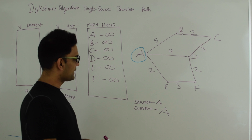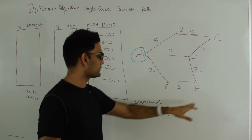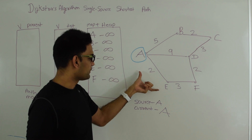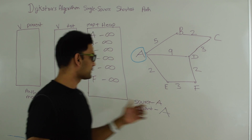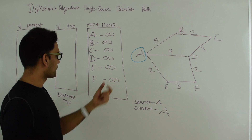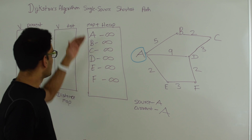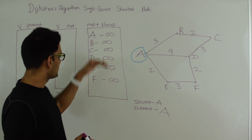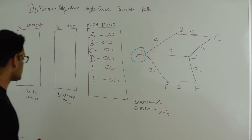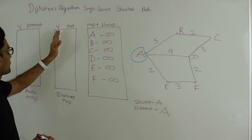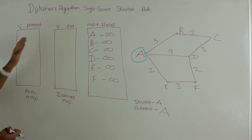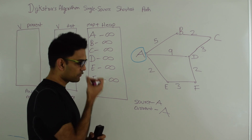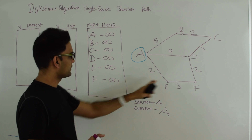After extracting E and exploring its neighbor F, the distance of F from A will be whatever the distance of E from A is plus the edge weight, so that's 5. We keep doing extract min until the data structure is empty. The distance map stores the shortest distance of each vertex from A, while the path map helps us trace back the shortest path from A to every vertex. Now let's do a dry run of this algorithm on this graph.